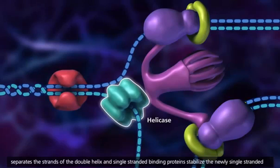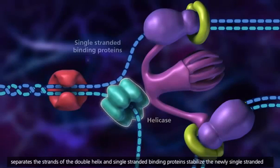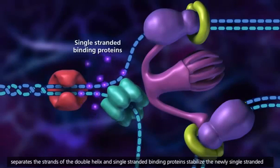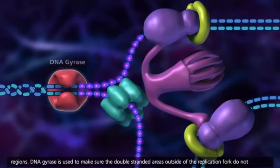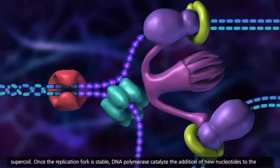Helicase separates the strands of the double helix, and single-stranded binding proteins stabilize the newly single-stranded regions. DNA gyrase is used to make sure the double-stranded areas outside of the replication fork do not supercoil.